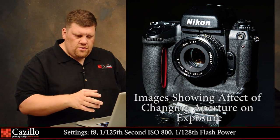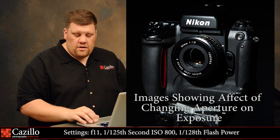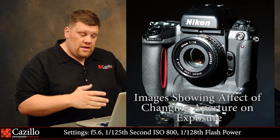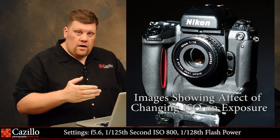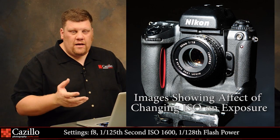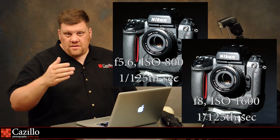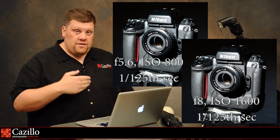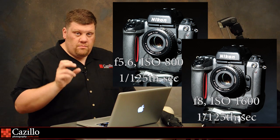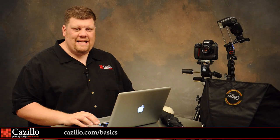Our base exposure is f/8 at ISO 800, 1/125th of a second. If we go to f/11, we get an underexposed picture. If we go down to f/5.6, we get an overexposed one. Same thing with ISO — going down to ISO 400 gives underexposure, going up to ISO 1600 gives overexposure. The ISO 1600 and f/5.6 versions should be almost identical since nothing else is changing, and comparing them side by side they look pretty much the same.